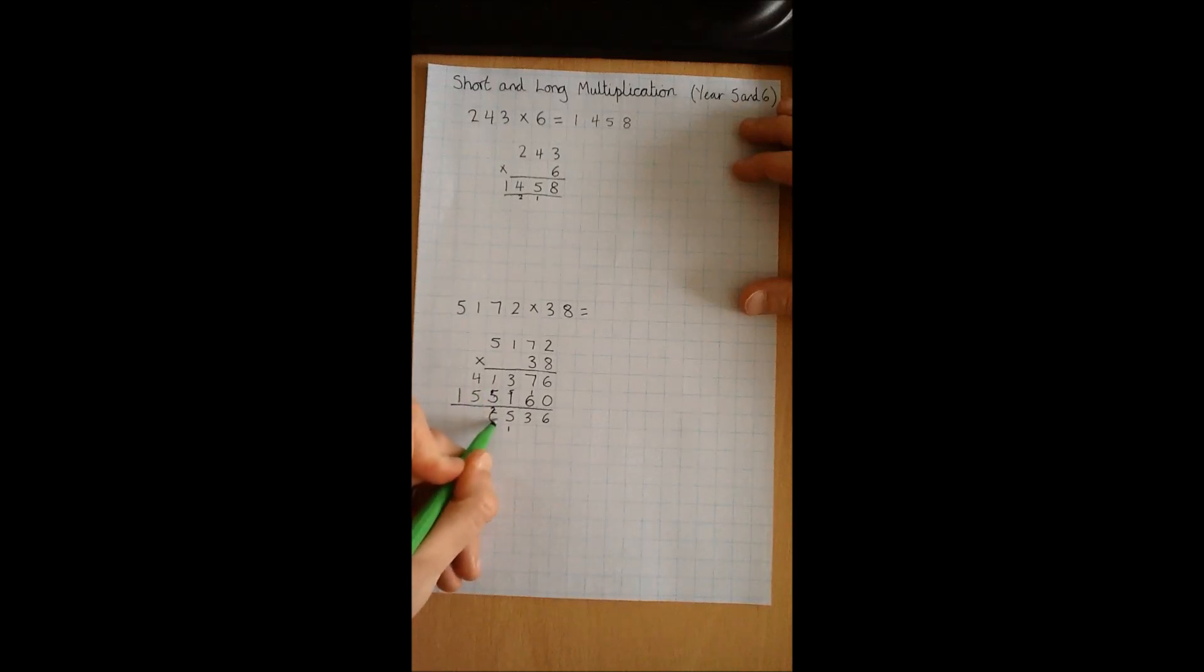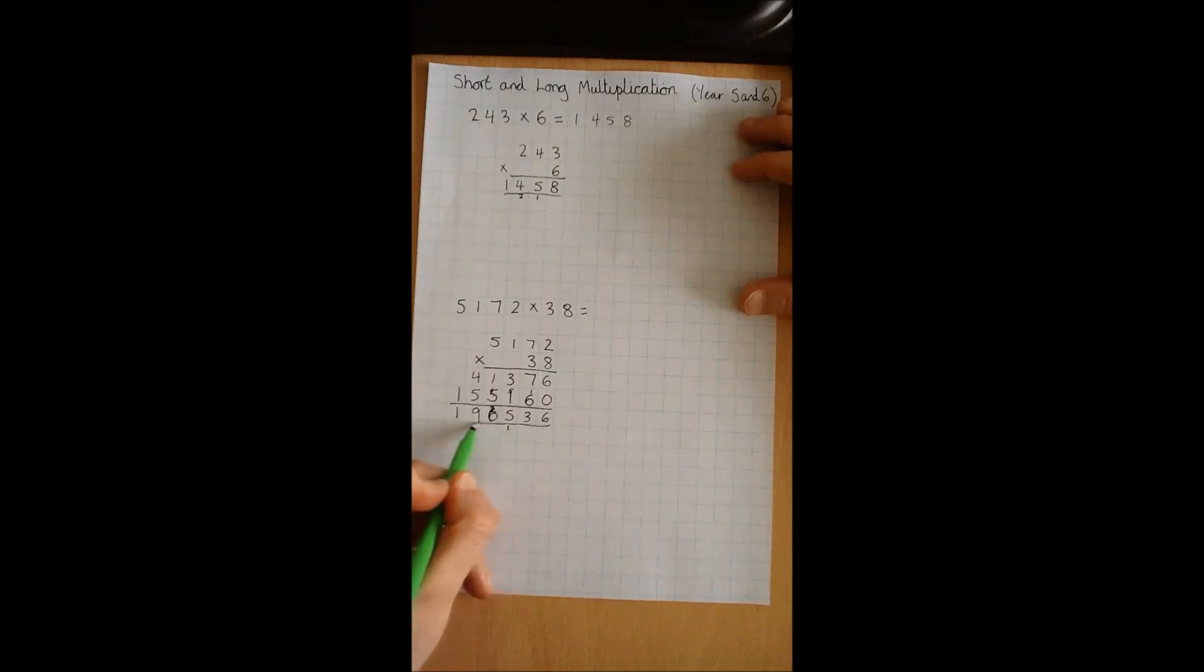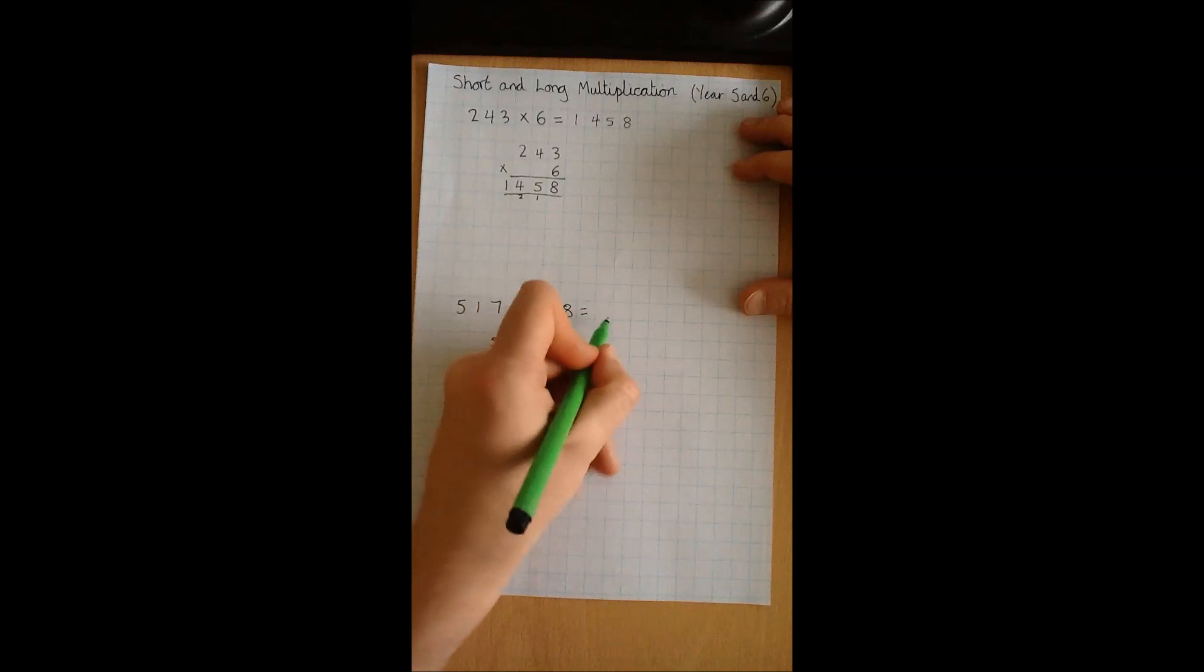5 plus 1 is 6. Make that nice and clear. 4 plus 5 is 9, and then the 1 on the end. So our final answer then is 196,536.